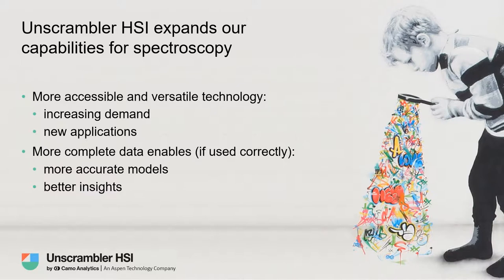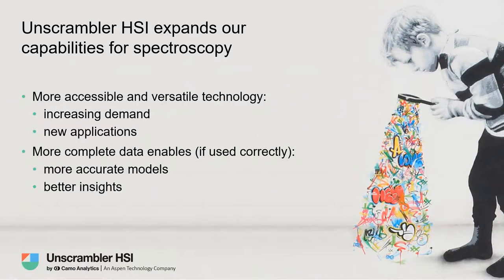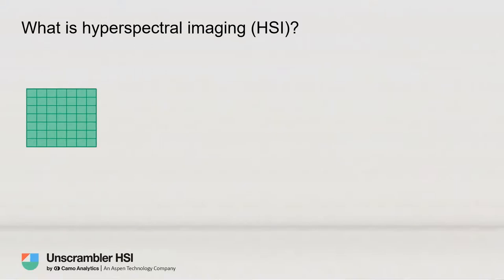When used correctly, this technology enables more accurate models in the sense that you measure more of the sample and more of what you want to monitor. It also provides better insights because you see the spatial domain — instead of only finding the spectral signature of any point in the process or product, you will see the entire distribution.